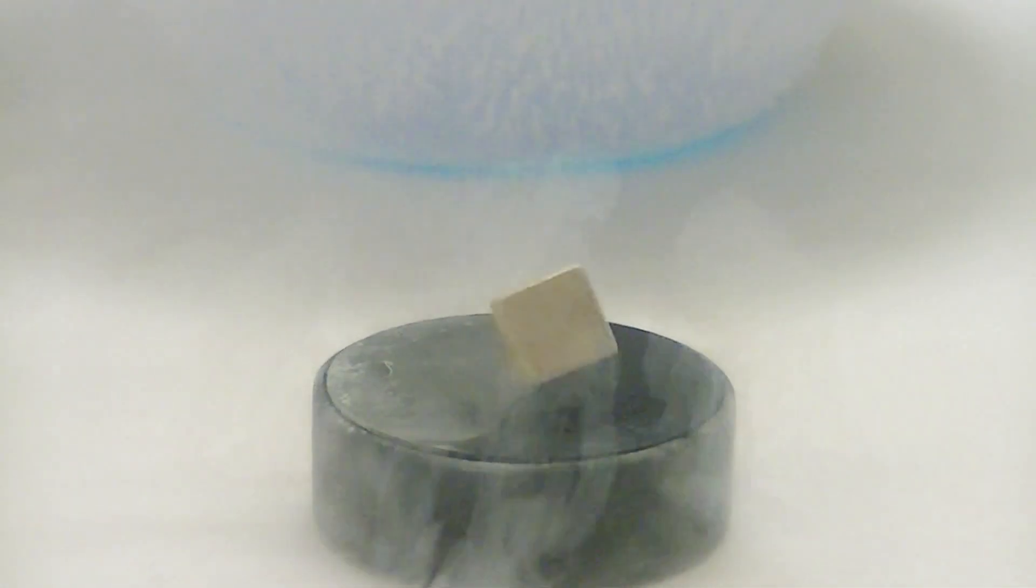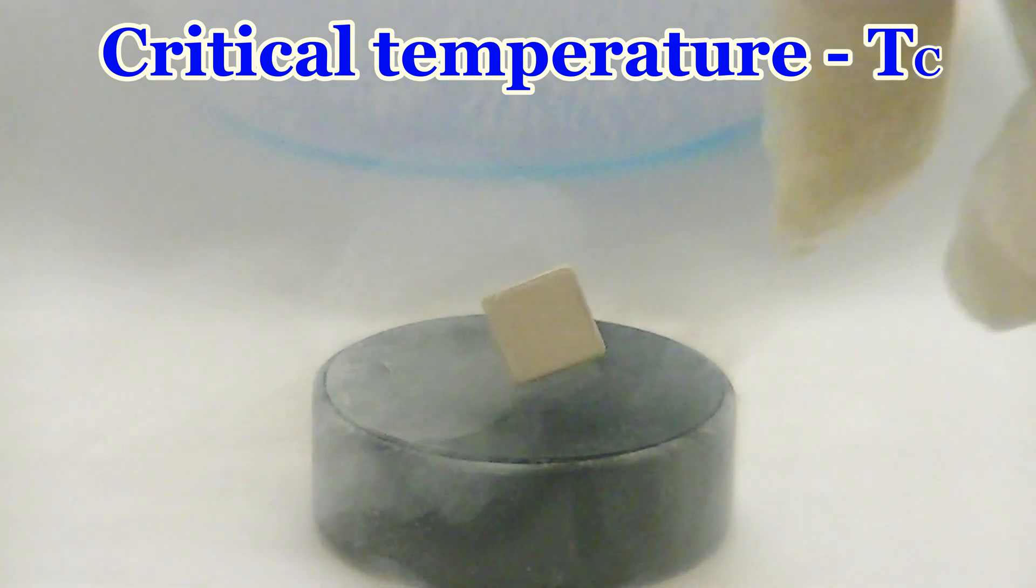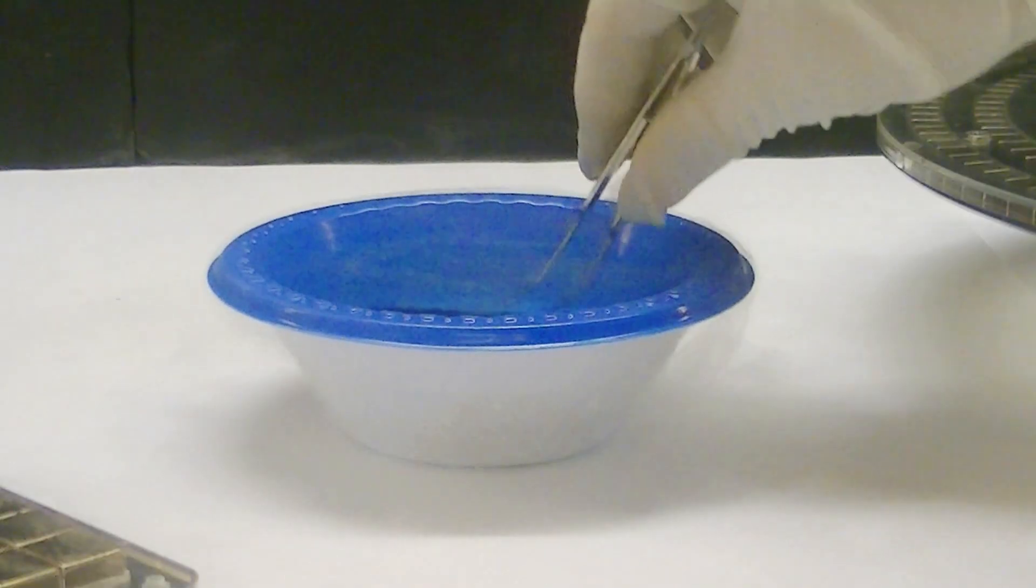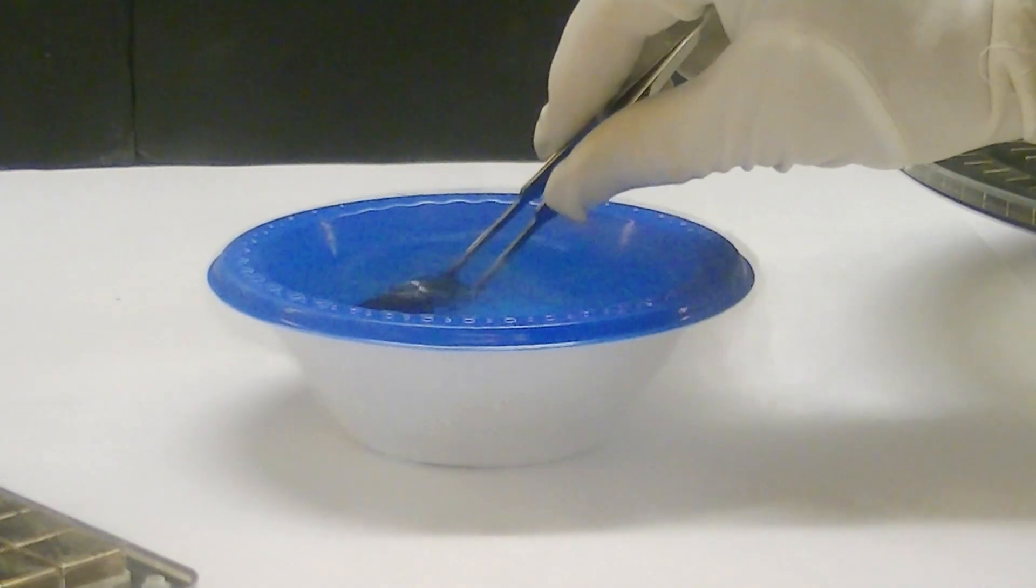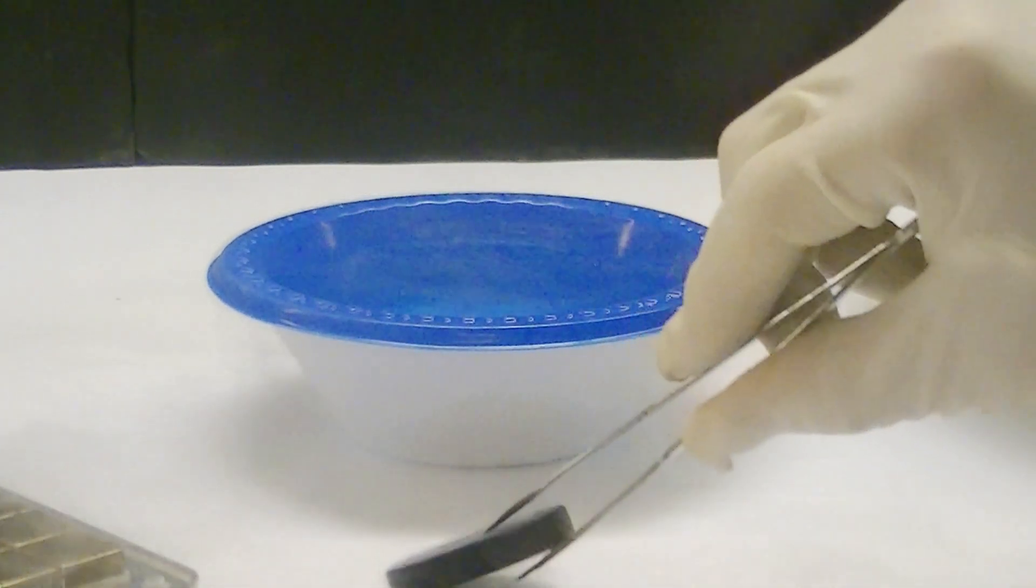It's only when a superconductor has been cooled below its critical temperature, sometimes called TC, that it displays its bizarre magnetic and electric properties. This YBCO superconductor has a critical temperature of about 90 Kelvin. Liquid nitrogen, which has a temperature of 77 Kelvin, is often used to cool a YBCO superconductor below its critical temperature.